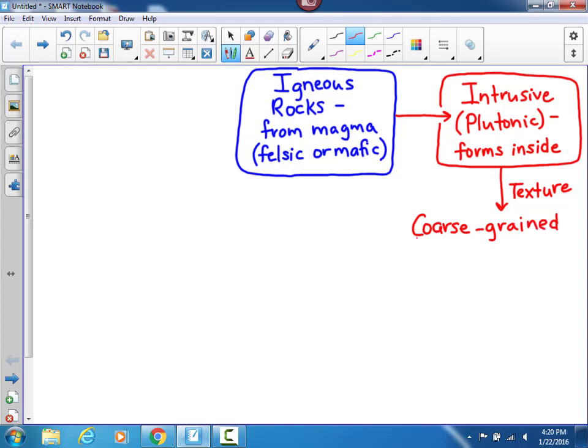Coarse-grained means that that rock has large, visible crystals.